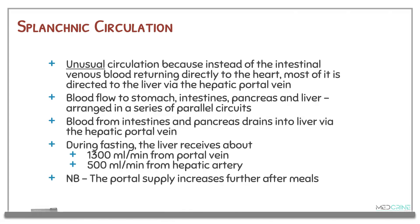The splanchnic circulation is a kind of series circulation because, instead of intestinal venous blood returning directly to the heart, most of it is directed to the liver through the hepatic portal vein. The blood flow to the stomach, intestines, pancreas, and liver is arranged in a series of parallel circuits, and blood from the intestines and pancreas drains into the liver via the hepatic portal vein. During fasting, the liver receives about 1,300 ml per minute from the portal vein and 500 ml per minute from the hepatic artery. Portal vein flow usually increases above these baseline values after meals.